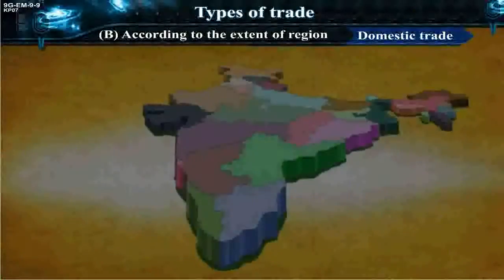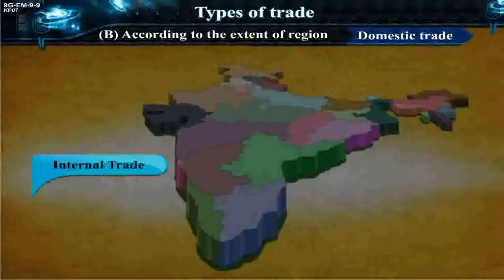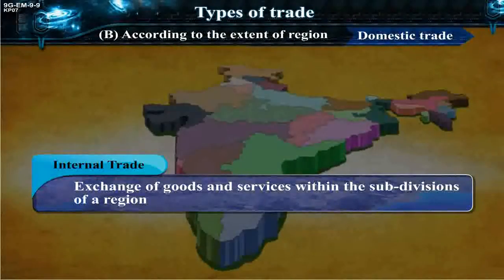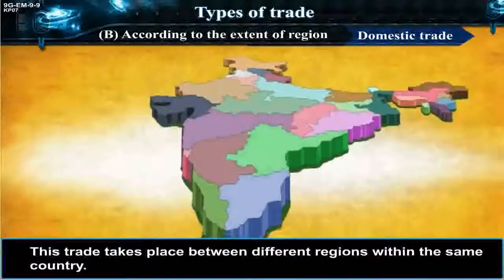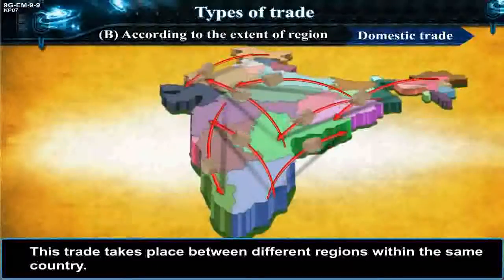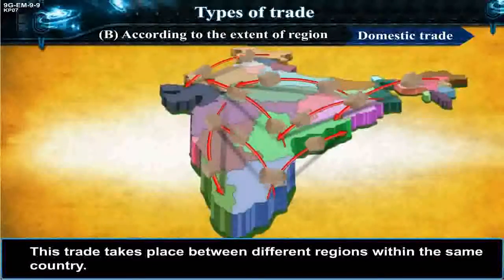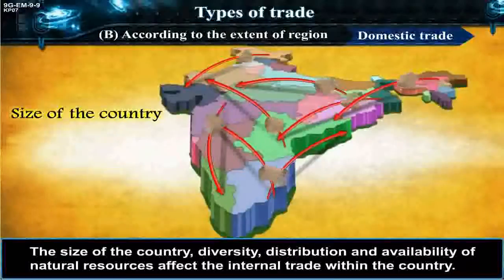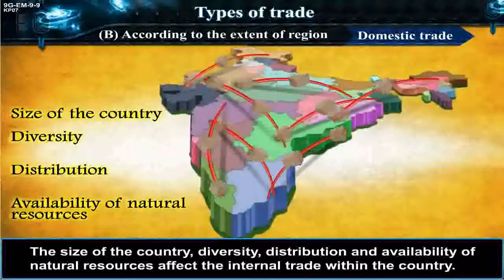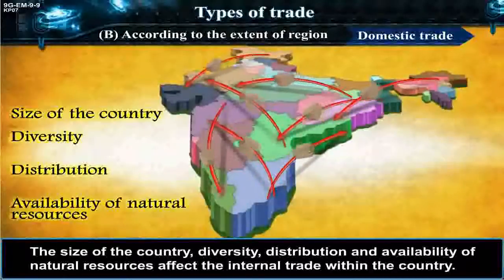Domestic trade or internal trade means exchange of goods and services within the subdivisions of a region. This trade takes place between different regions within the same country. The size of the country, diversity, distribution and availability of natural resources affect the internal trade within the country.